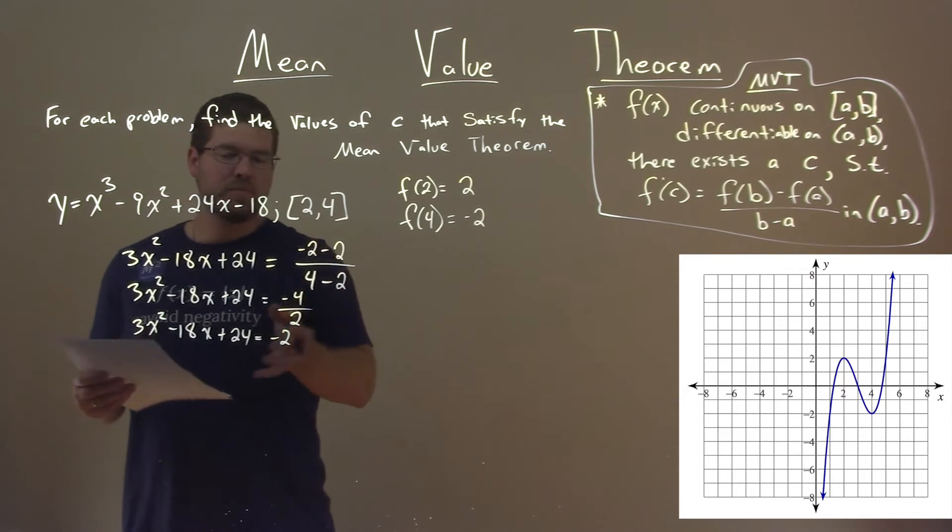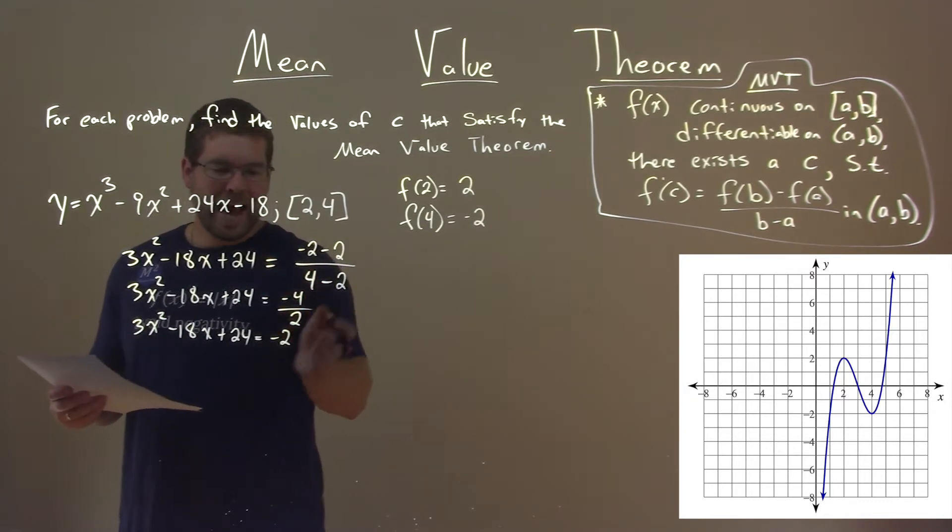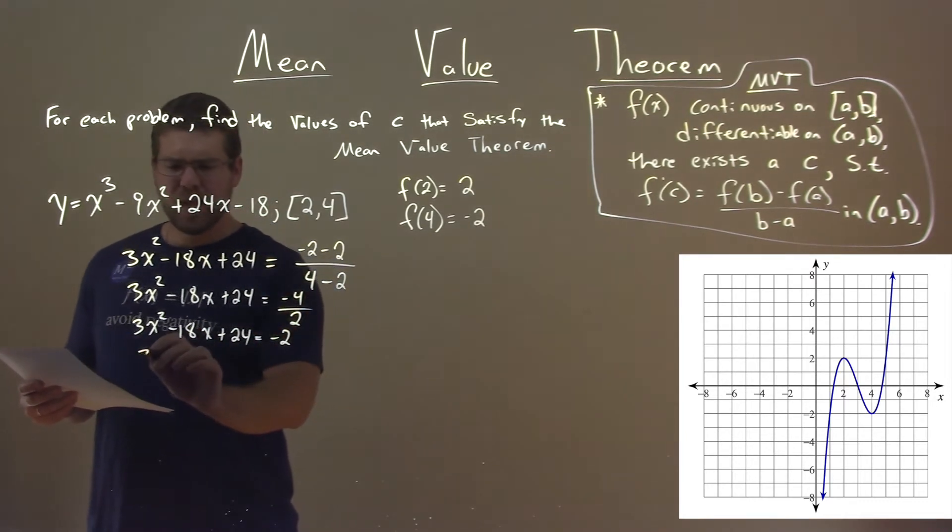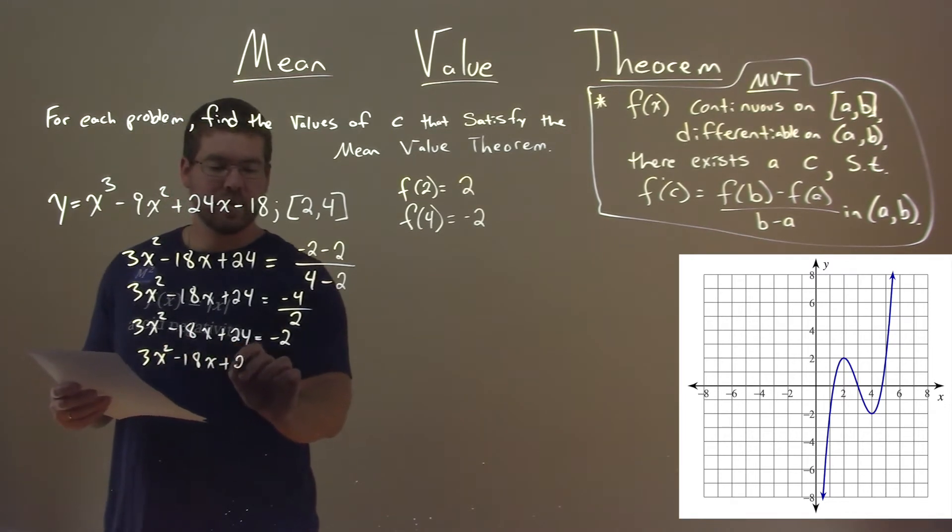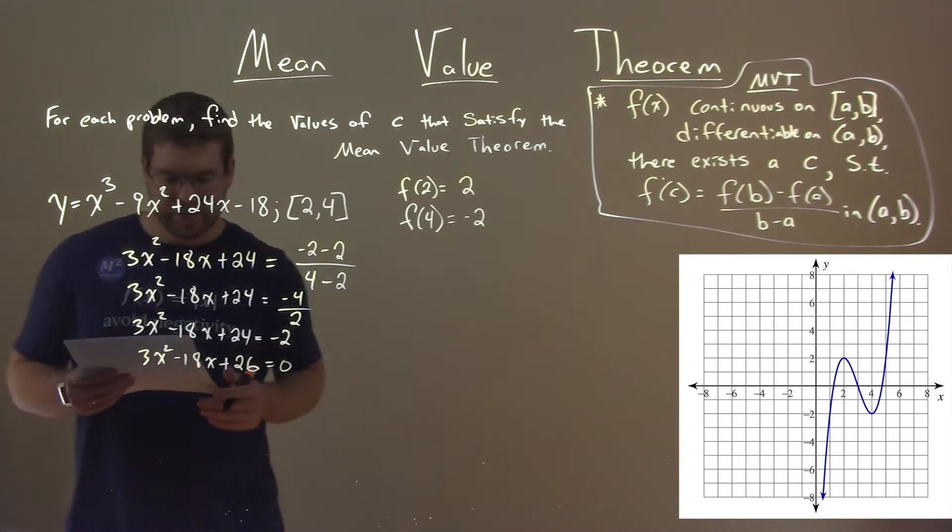Now, we're solving for x here, so we're going to add a 2 to both sides, and we have a 3x squared minus 18x plus a 26, and that's equal to 0. From here, we're going to have to use the quadratic formula.